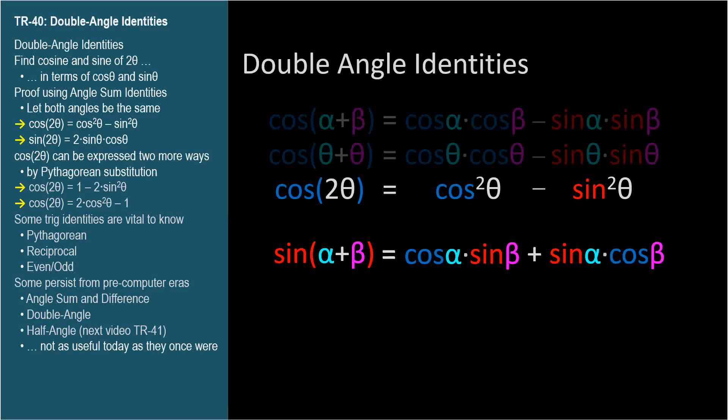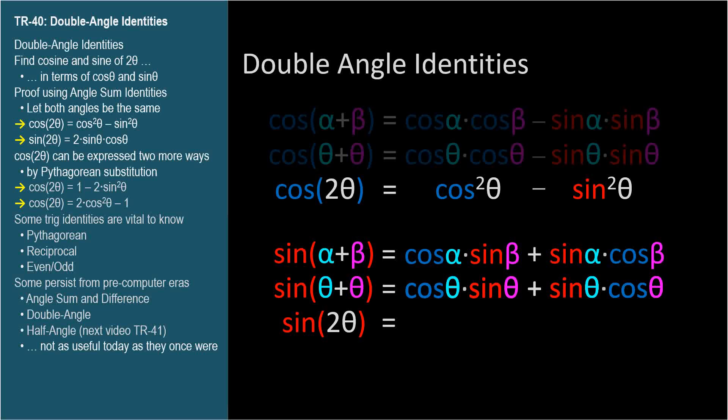Sine θ plus θ equals cosine θ times sine θ plus sine θ times cosine θ. Rearranging the right side makes it clear that we have 2 cosine θ sine θ.